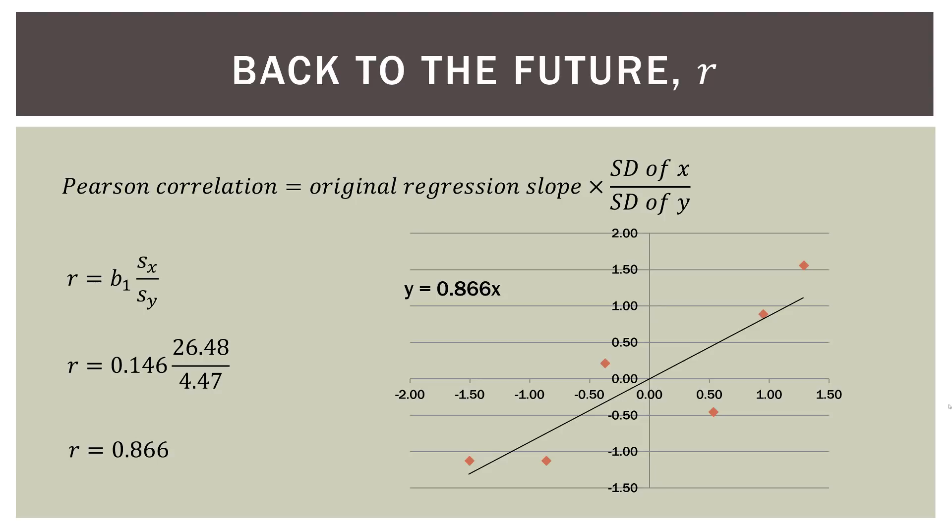So you can see that everything here is related, especially when we're talking about standardized scores. The correlation, the regression slope based on the non-standardized values, and then the deviation of both variables are all related. And that happens when we look at how we regress standardized values.